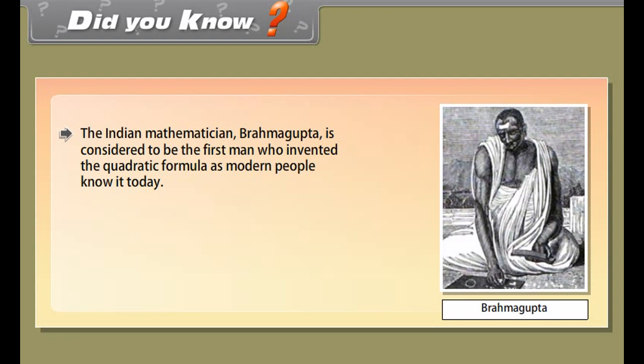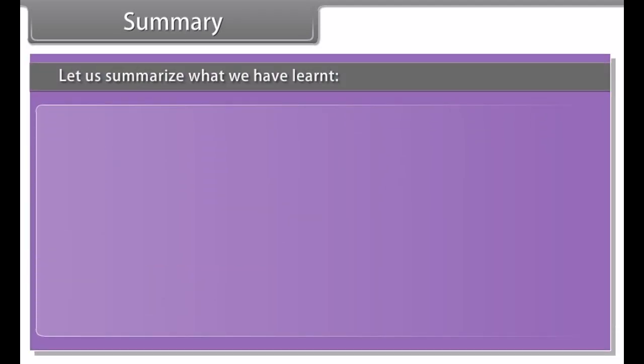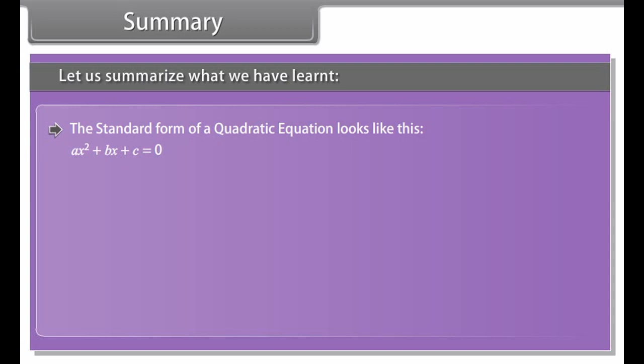Did you know? The Indian mathematician Brahmagupta is considered to be the first man who invented the quadratic formula as modern people know it today. Quadratic equations not only describe the orbits along which the planets move around the sun, but also gave a way to observe them more closely.